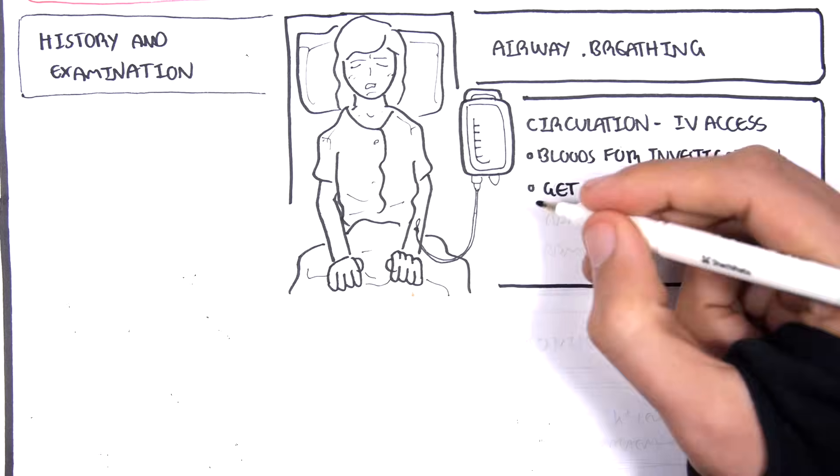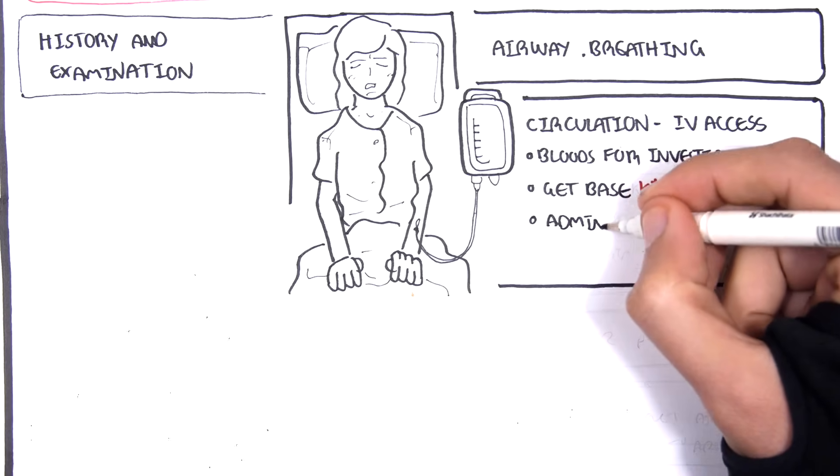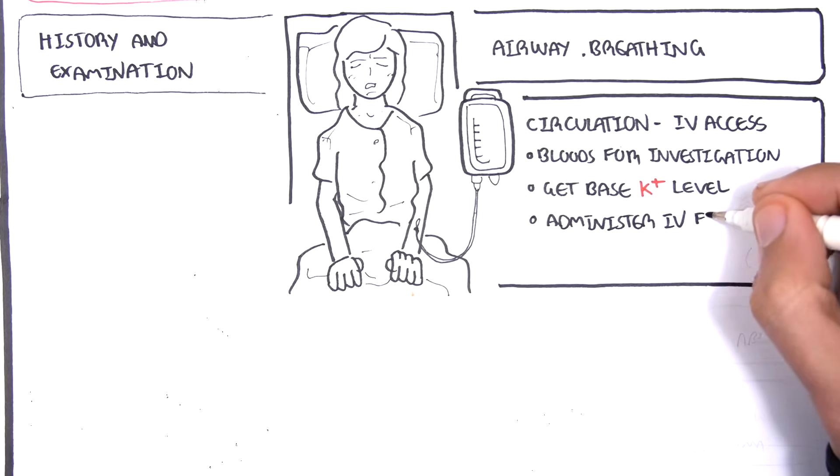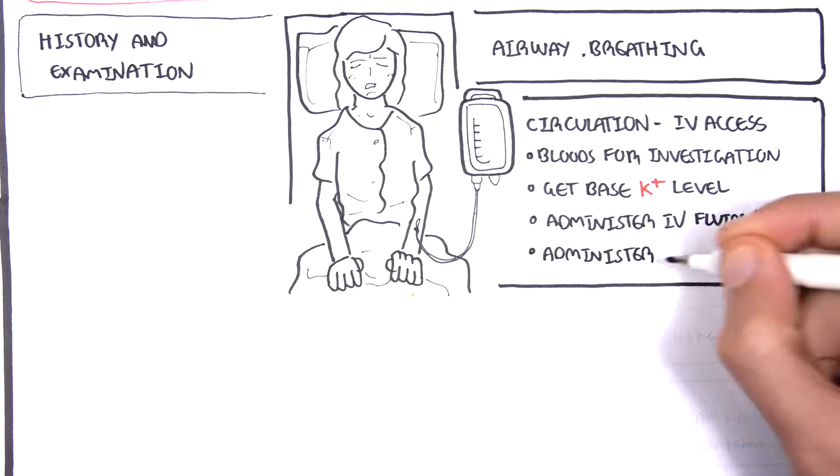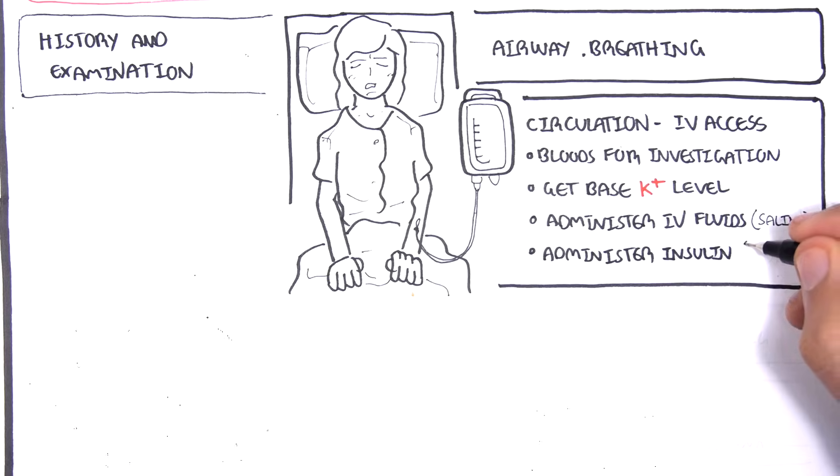It's also important here to get a baseline serum potassium level. After getting the bloods for investigation, administering IV fluids, saline, and also administration of insulin slowly is very important. Administration of insulin is important because we want the cells in the body to take up the glucose that is in the blood.